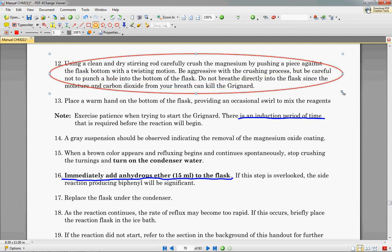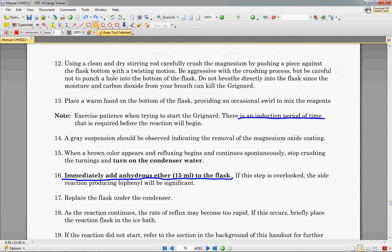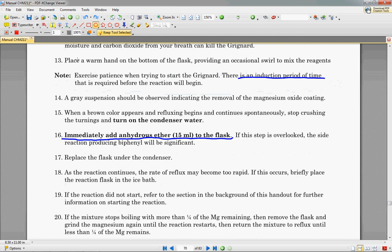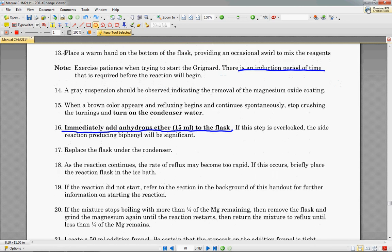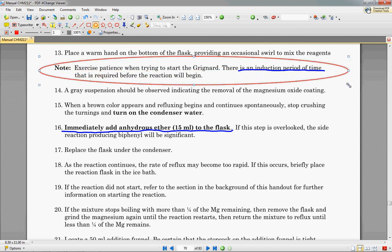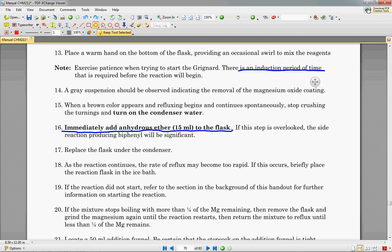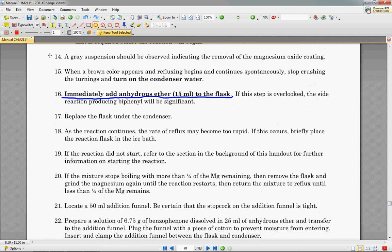Using a dry stirring rod, crush the magnesium in the reaction flask. Be aggressive with the crushing process, but be careful not to punch a hole into the bottom of the flask because that's obviously very bad. Do not breathe directly into the flask as your disgusting breath is full of disgusting moisture. So we're going to then place a warm hand on the bottom of the flask to help it warm up and to kickstart the reaction. And it says, please exercise patience as there is an induction period of time before the reaction will begin.